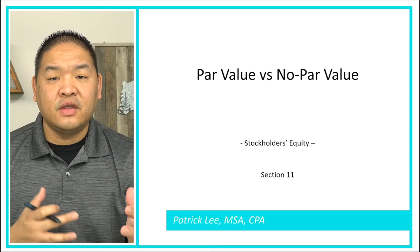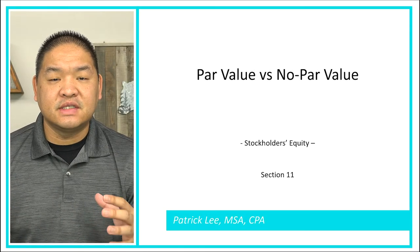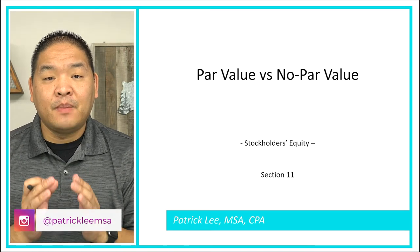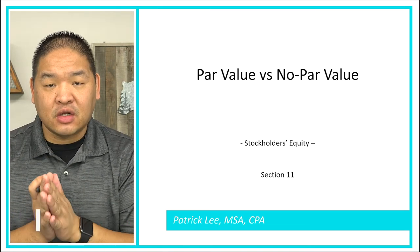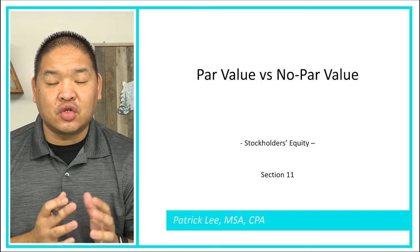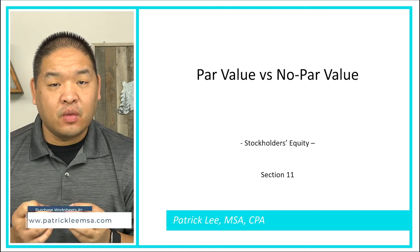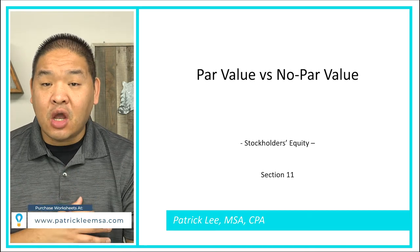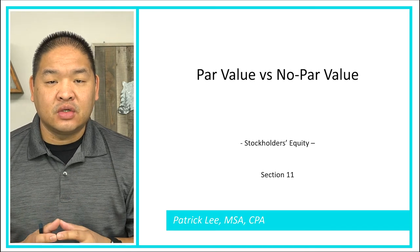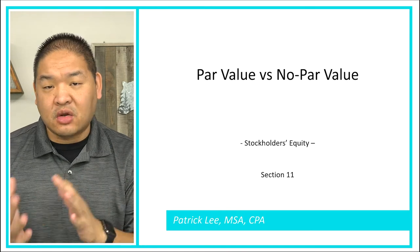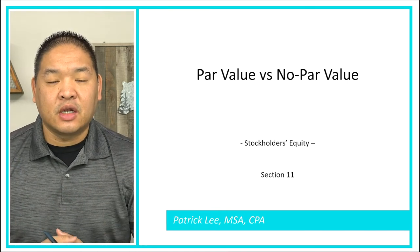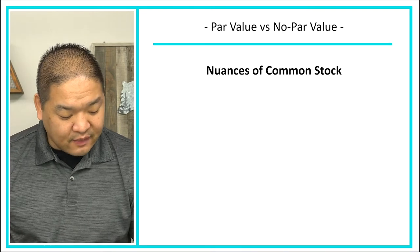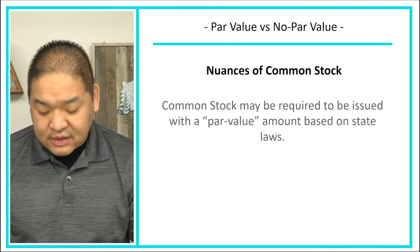In this lesson we're going to be looking at par value versus no par value. This is a small segment of issuing common stock, but it can have an impact when we do our journal entries. We need to understand how a par value entry would look versus a no par value entry, so that we're debiting and crediting the right accounts. Let's get started — some nuances on common stock.